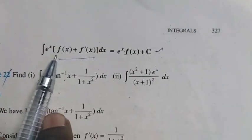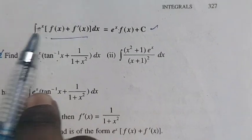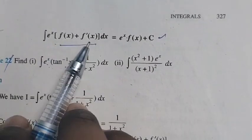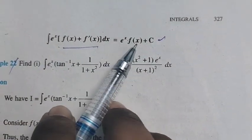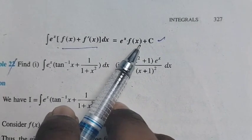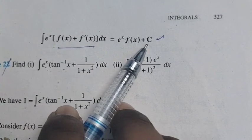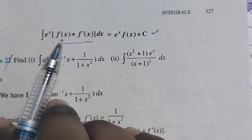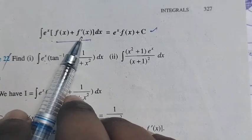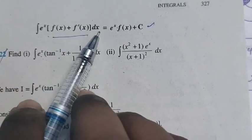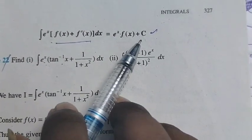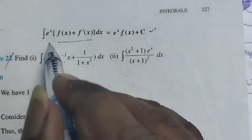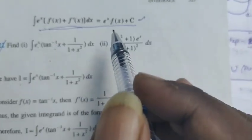This is one of the short tricks: the integral of e^x into [f(x) + f'(x)] dx is equal to e^x · f(x) + constant. You can think of it as a formula also.